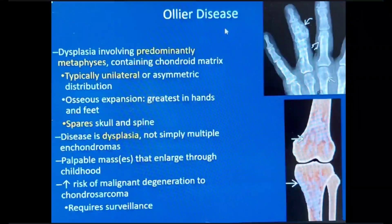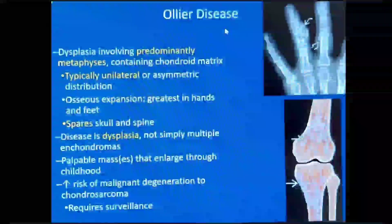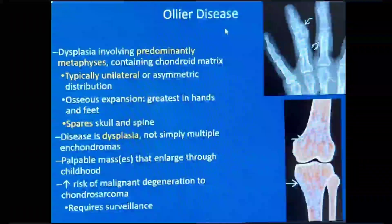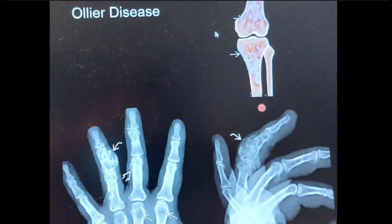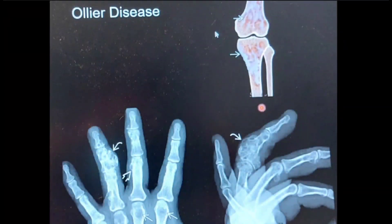Ollier disease is a condition where multiple enchondromas are present within the bone, involving the hands and other joints but sparing the skull and spine. It is a dysplastic disease with increased risk of malignant transformation. On these X-ray images, multiple enchondromas are visible, some as enchondroma protuberans extending beyond the cortex, with cortical expansion and central chondroid matrix. The hands are predominantly involved, though the tibia may also be affected.